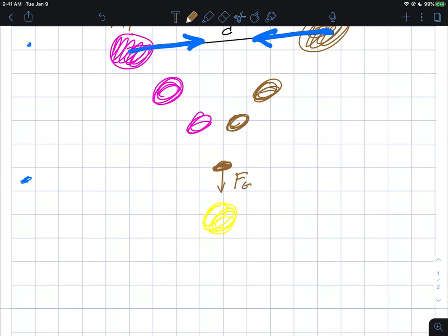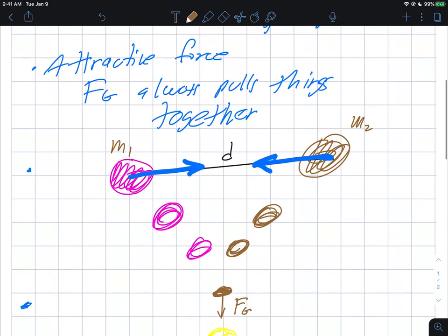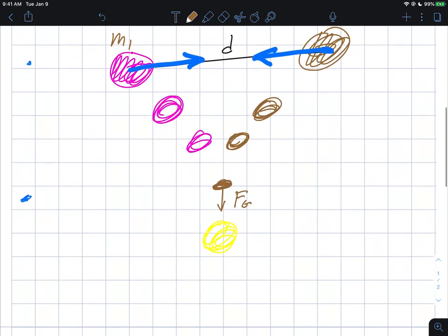In other words, the F_g is attracted towards the sun because the F_g always wants to pull things together. So it is true that the sun in this case here would want to pull this mass towards it and there could be a collision.